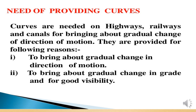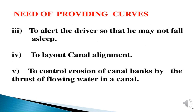The first reason for providing curves is to change the direction of the road as necessary, whether left or right. The second reason is to bring about gradual changes in grade and to maintain good visibility — for example, to see buildings or other objects along the road. The third reason is to alert the driver so that he does not fall asleep; if the road is continuously straight, the driver may become drowsy. Curves are therefore important for road safety.